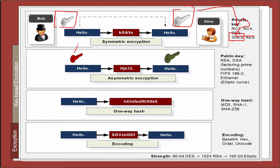Then we have asymmetric encryption — that's like a public key — so we have one key to encrypt and then there is another key which will decrypt. We also have one-way hashing: MD5, SHA-1, SHA-256, where it should be possible to easily go one way but not reverse. And then of course we have encodings such as Base64, HEX, and OCTO.